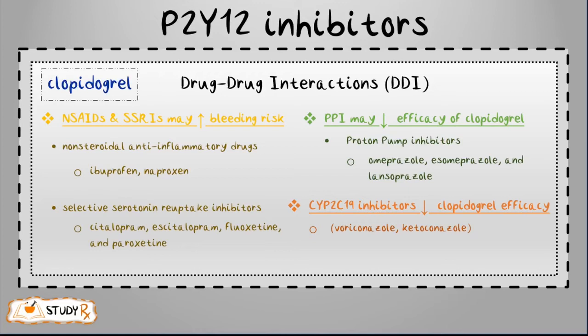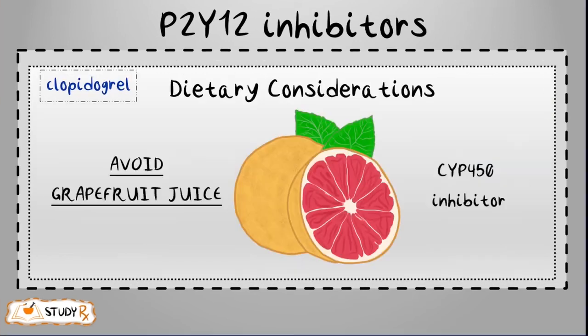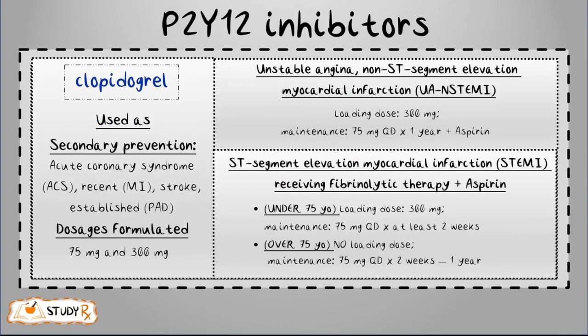CYP2C19 inhibitors also decrease clopidogrel efficacy; examples include voriconazole and ketoconazole. Adverse reactions for clopidogrel include risk of hemorrhage — bleeding anywhere in the body from a ruptured blood vessel — specifically GI hemorrhage and intracranial bleeding. For dietary considerations, grapefruit juice must be avoided, as it acts as a competitive inhibitor of the CYP450 enzyme.